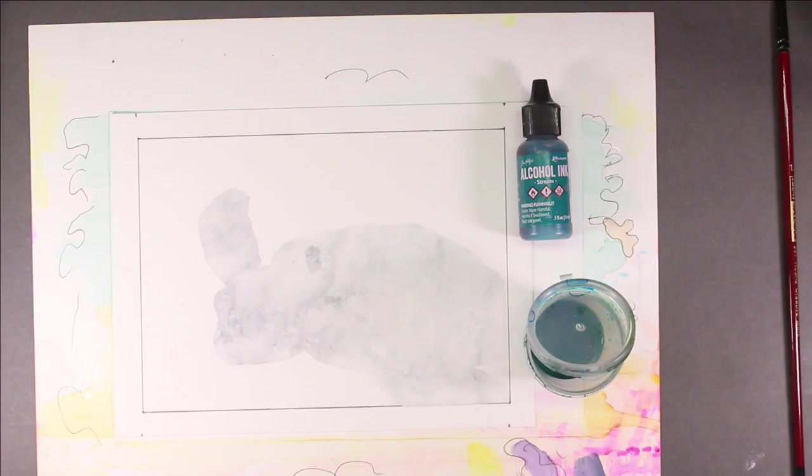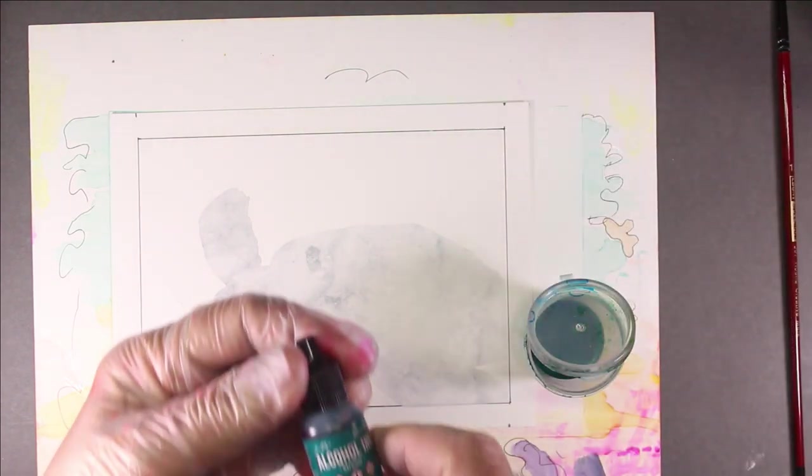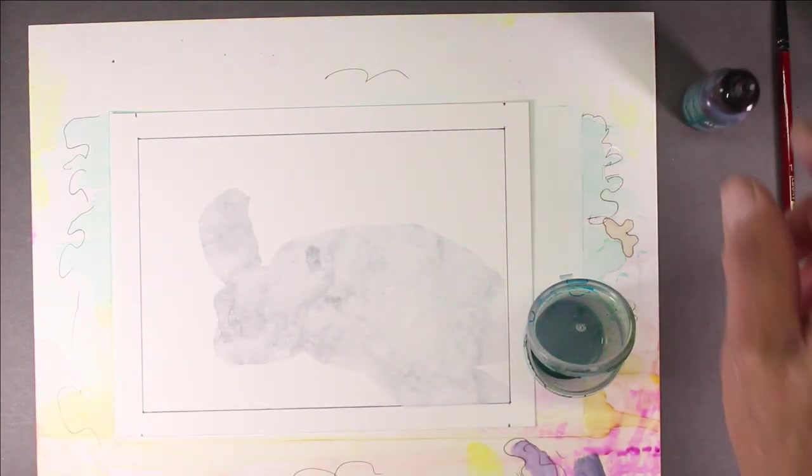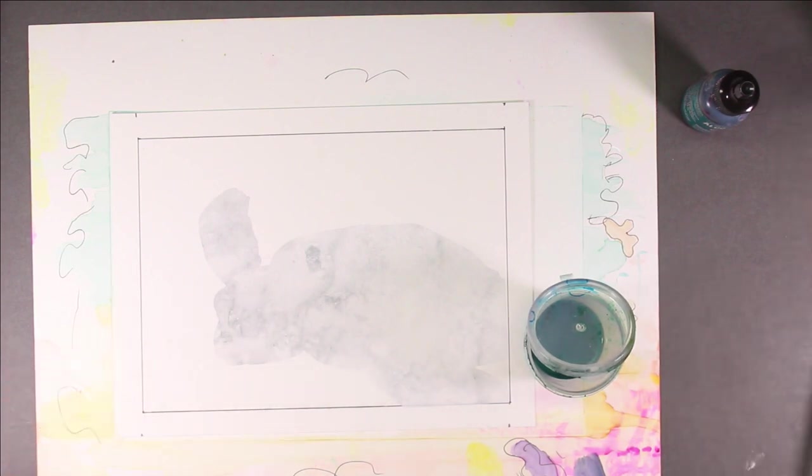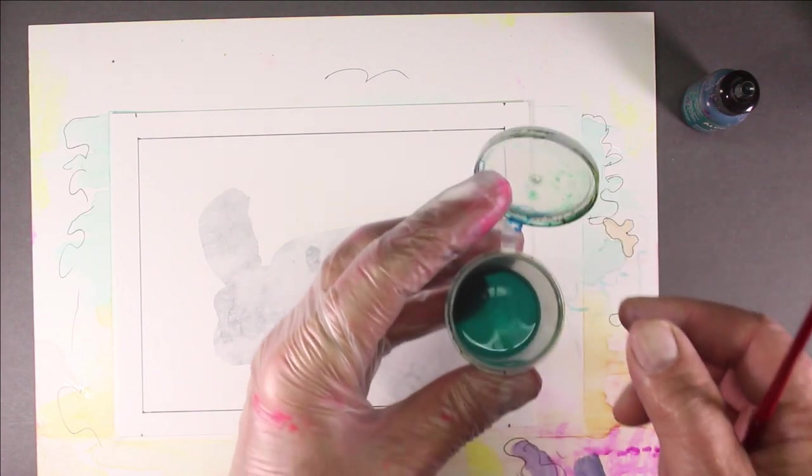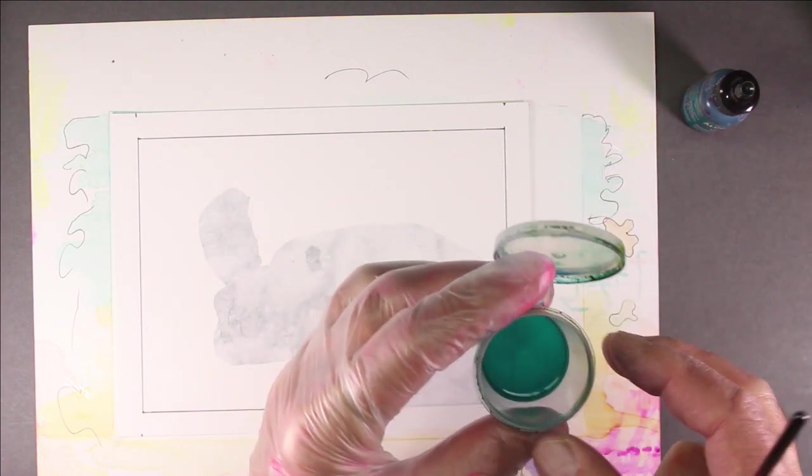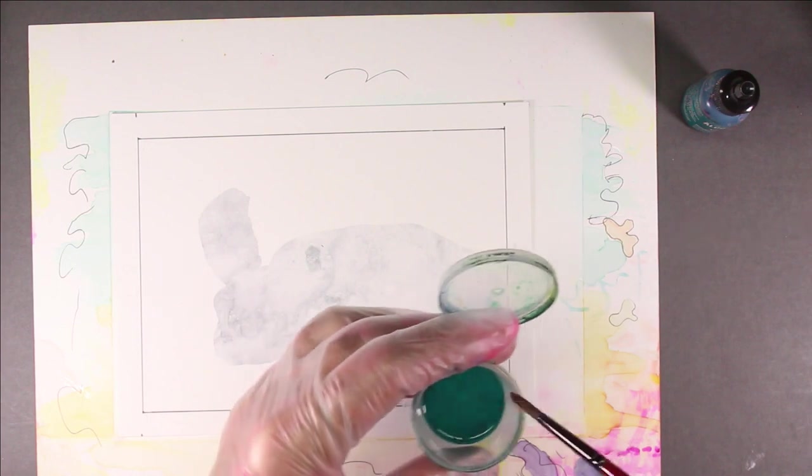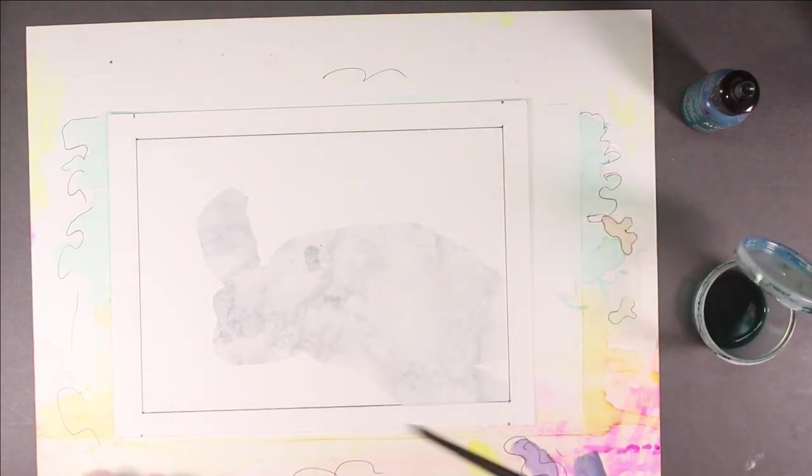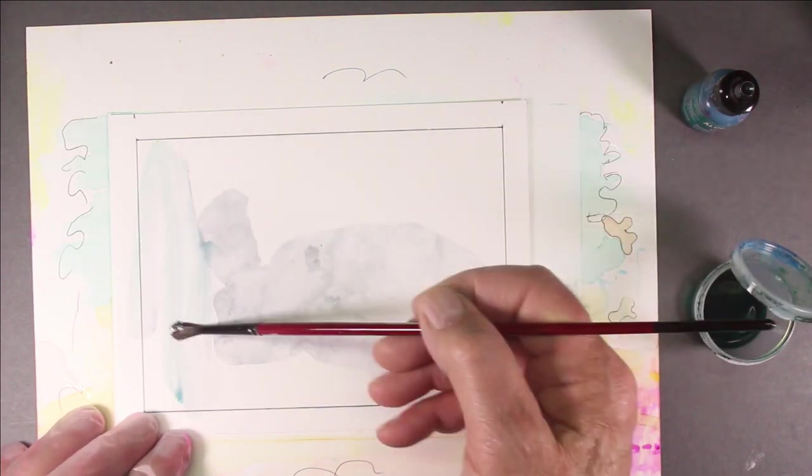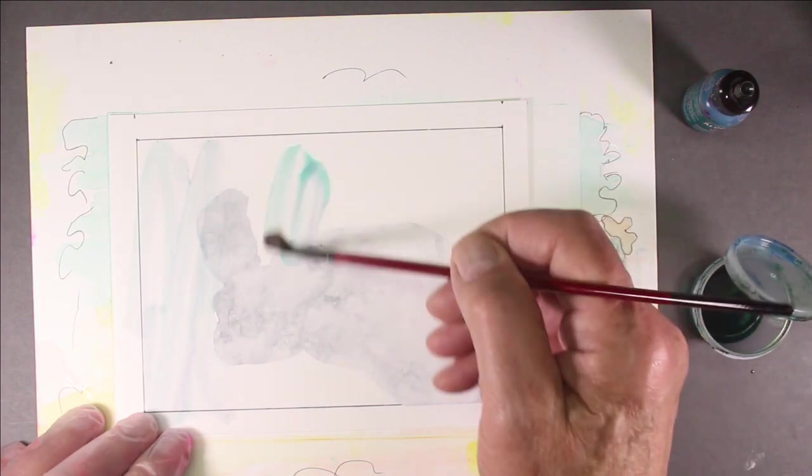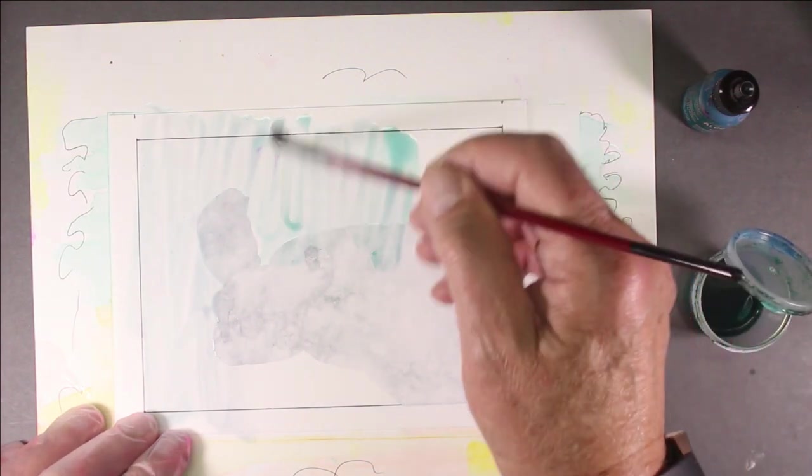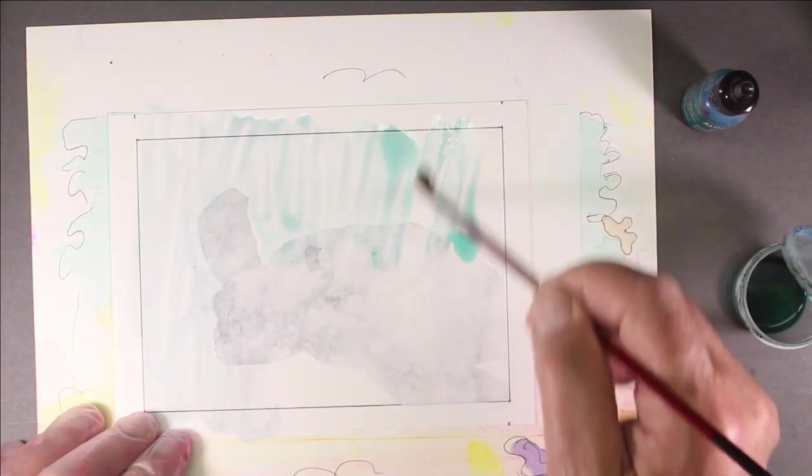The alcohol ink I'll be using for my background is a Grainger brand and the color is Scream. Now you can use the brand of your choice and the color of your choice, that is not really important. I have diluted some of that alcohol ink with 91% alcohol. I'm also going to apply it with a brush and it's pretty important to make sure that the alcohol ink looks streaked on the Yupo paper.